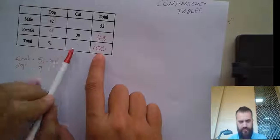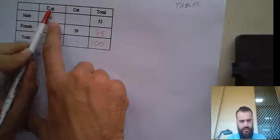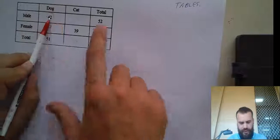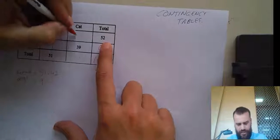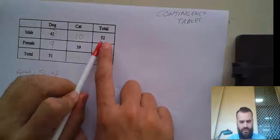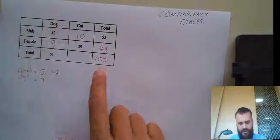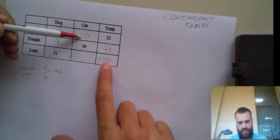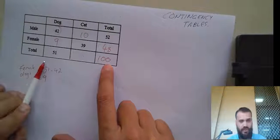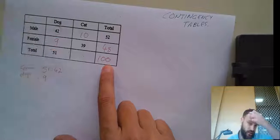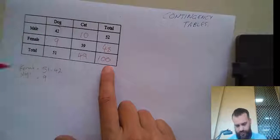Now it's just a matter of getting these last two. There are 42 male dogs and 52 males in total, so that means there must be 10 male cats — 52 minus 42. And finally, I can either add down: 10 cats plus 39 cats, or subtract: 100 minus 51. I'll do addition because I find it easier. 10 plus 39 equals 49.